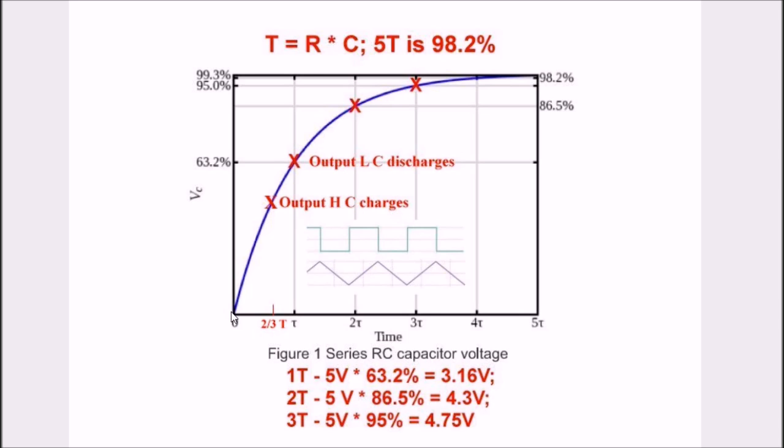And 63.2% of 5 volts is 3.16 volts. So within a little under 1T, in this charge curve, this will hit about 3 volts. Now remember, the charge voltage for C is coming from the output. When this hits around 3 volts, the output will switch low.